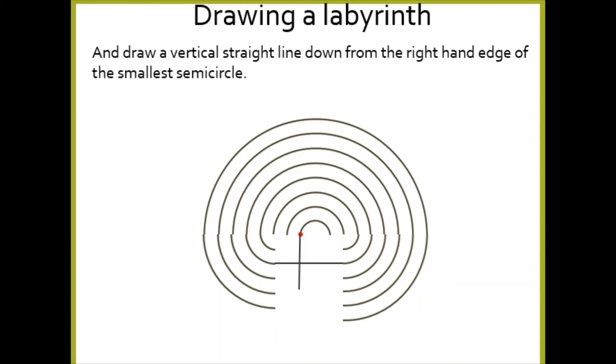And then you're going to connect this point here with this bottom semicircle here. Okay, so we've got a little cross here. Does yours look like that on your piece of paper?